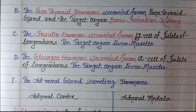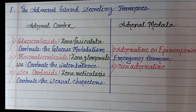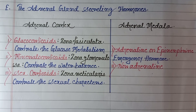Next, insulin is secreted from the beta cells of the islets of Langerhans, and the target organs are the liver and muscle. Next, glucagon is secreted from the alpha cells of the islets of Langerhans, and the target organs are also the liver and muscle.